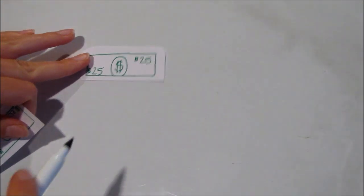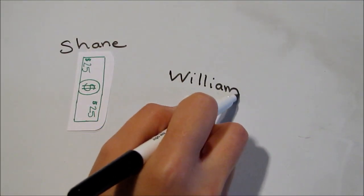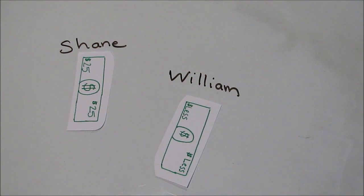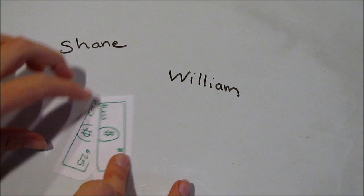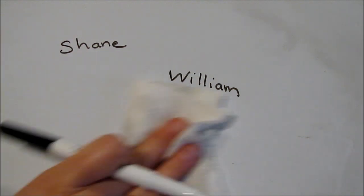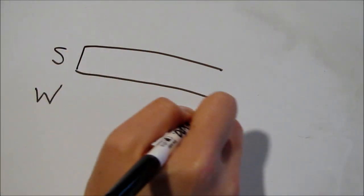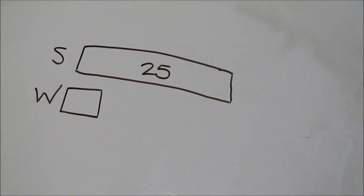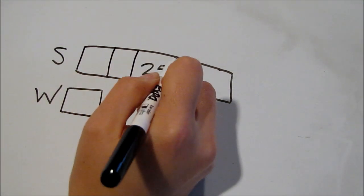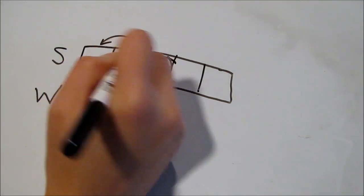Here's another problem. Shane has twenty-five dollars, which is five times more money than his little brother William has. We want to find out how much money William has. We can't combine their money to find William's. We can't separate because it's not together. So we have to compare it. Here's Shane's money, and here's William's. Shane has more and has twenty-five dollars. Shane's money is also five times William's, so we'll cut his strip into five pieces. William's strip is only the same size as one of those pieces. Since we're trying to find out about a group and all of the groups are equal sizes, we can divide and find that William has five dollars.